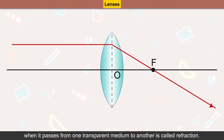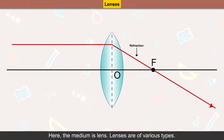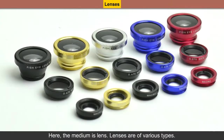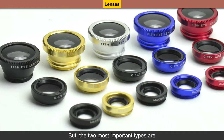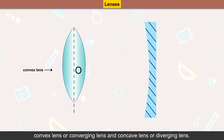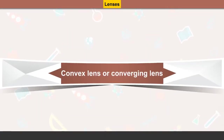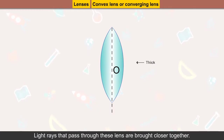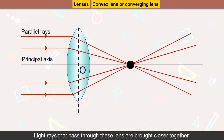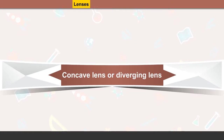Here the medium is the lens. Lenses are of various types, but the two most important types are convex lens or converging lens, and concave lens or diverging lens. Convex lenses are thick in the middle, and light rays that pass through them are brought closer together.